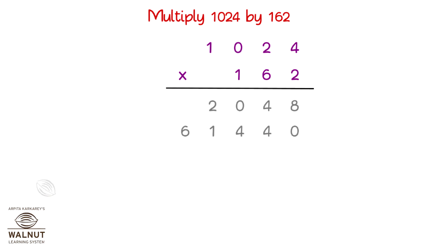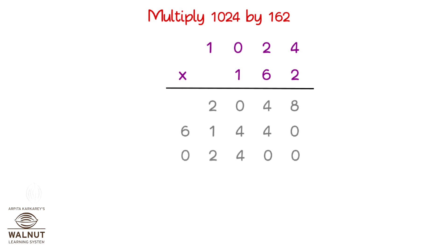We add a zero in the units place and another zero in the tens place. Now we multiply by 1. One fours are 4. We write this 4 in the hundreds place. One twos are 2. One zeros are 0. And one ones are 1.